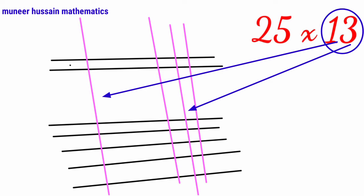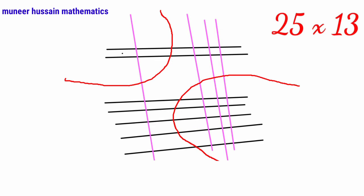Now we shall separate top left and bottom right. Now we shall count the point of intersections. First of all, from the bottom right. Here, these are 15 point of intersection. We shall write 5 here and 1 carry.